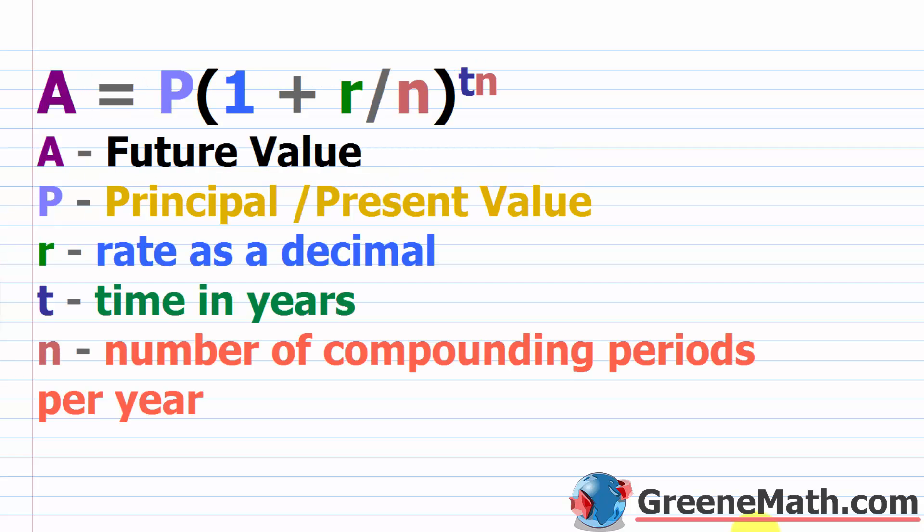We've already worked with the compound interest formula and used it to solve some simple word problems. Let's look at this real quick. We have A, the future value, equals P, the principal or present value of your investment, times the quantity 1 plus R, which is the rate as a decimal, divided by N, the number of compounding periods per year.